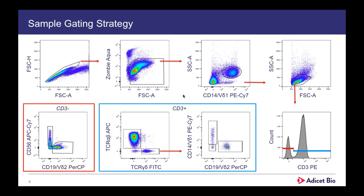This is our gating strategy. We gate on singlet cells that are live by Zombie Aqua negativity, and identify monocytes through CD14 and high side scatter. From the monocyte-negative fraction, we identify lymphocytes through forward scatter and side scatter. We gate on CD3-positive and CD3-negative events. In the CD3-negative compartment we identify NK cells by CD56 positivity and B cells through CD19 positivity. In the CD3-positive compartment we identify alpha-beta T cells through TCR alpha-beta, gamma-delta through total gamma-delta expression, and then subset gamma-deltas into V-delta-1 single positive, V-delta-2 single positive, and V-delta-1/V-delta-2 double-negative populations. Notably, gamma-delta frequency in starting material is less than 2% of total T cells, requiring high resolution.